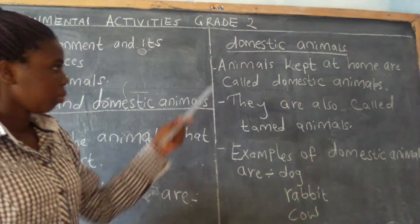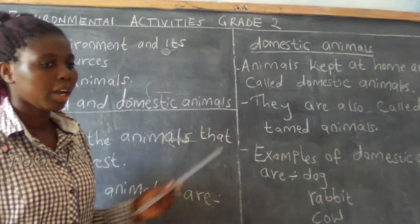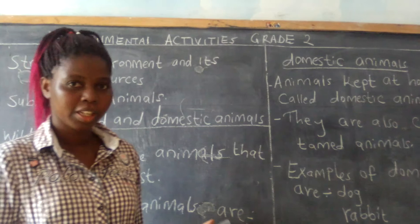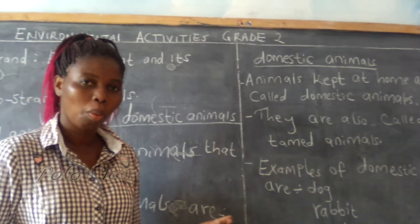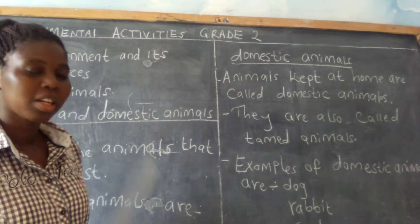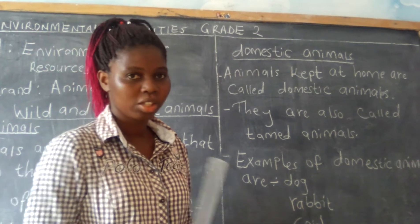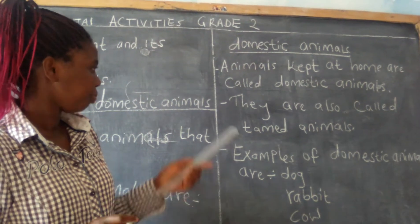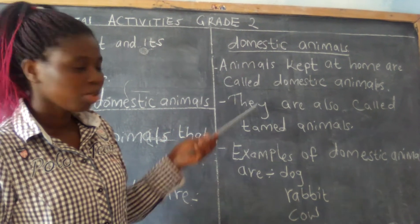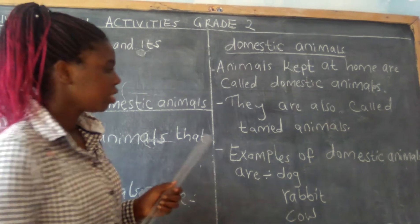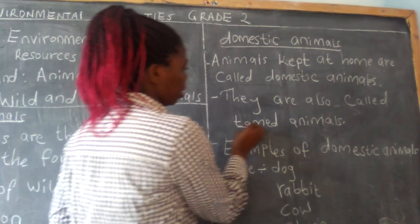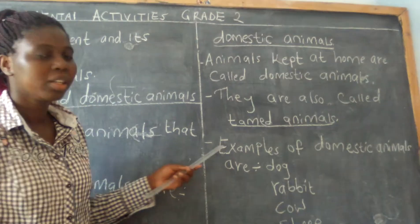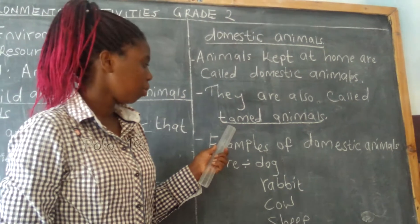From wild animals, I want us to go to domestic animals. Domestic animals are the animals kept at home. They have another name — they are also called tamed animals.